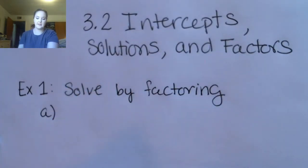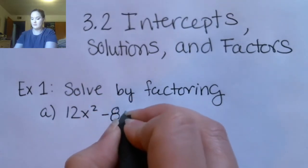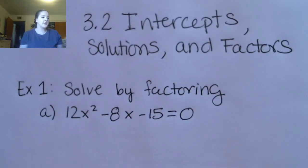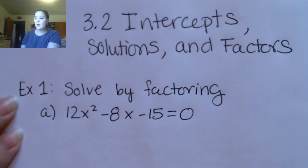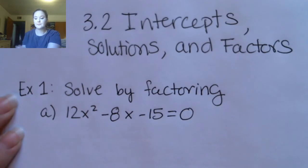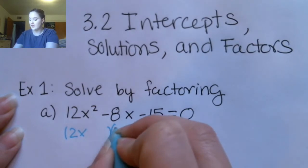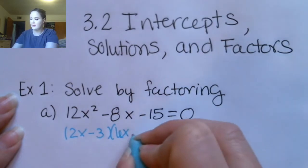We're going to look at a couple of basic examples of solving by factoring. Since we've been specifically directed to solve by factoring, we're going to start by factoring this. You would need to factor this by guess and check, so I would encourage you to pause the video and go ahead and factor this for yourself. I know that this factors as 2x and 6x, and then this is going to be minus 3 and plus 5.